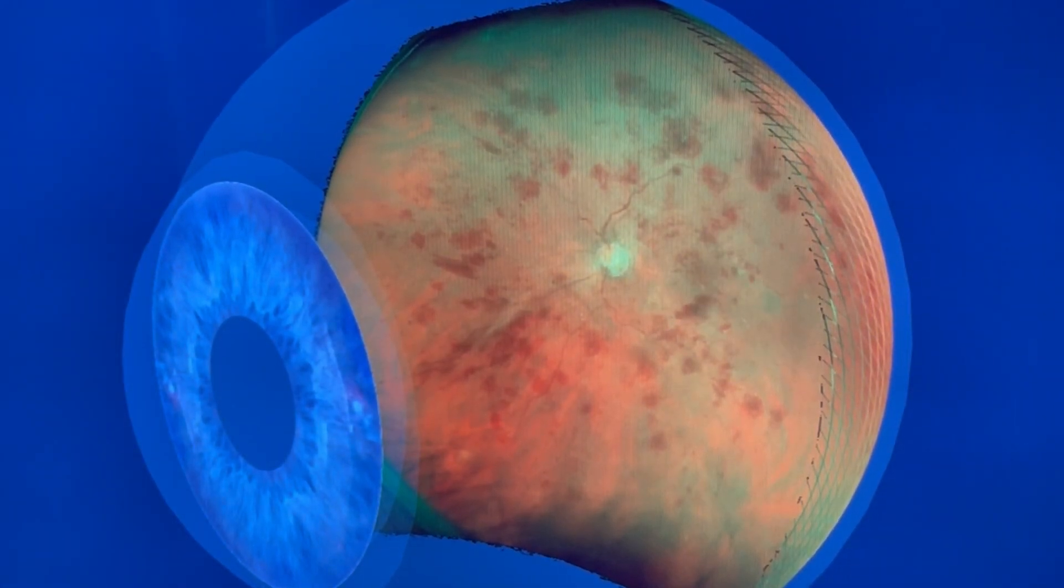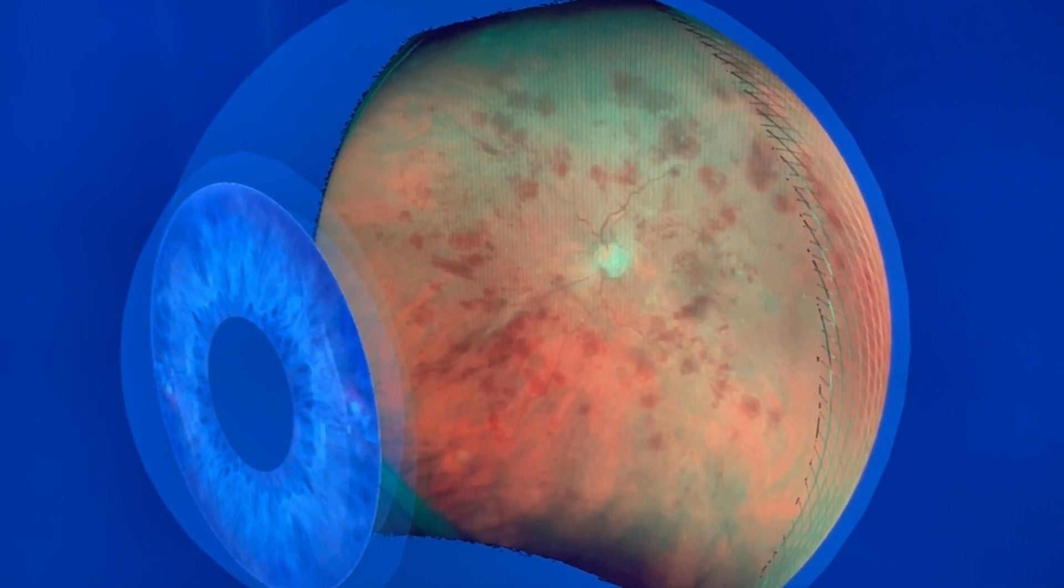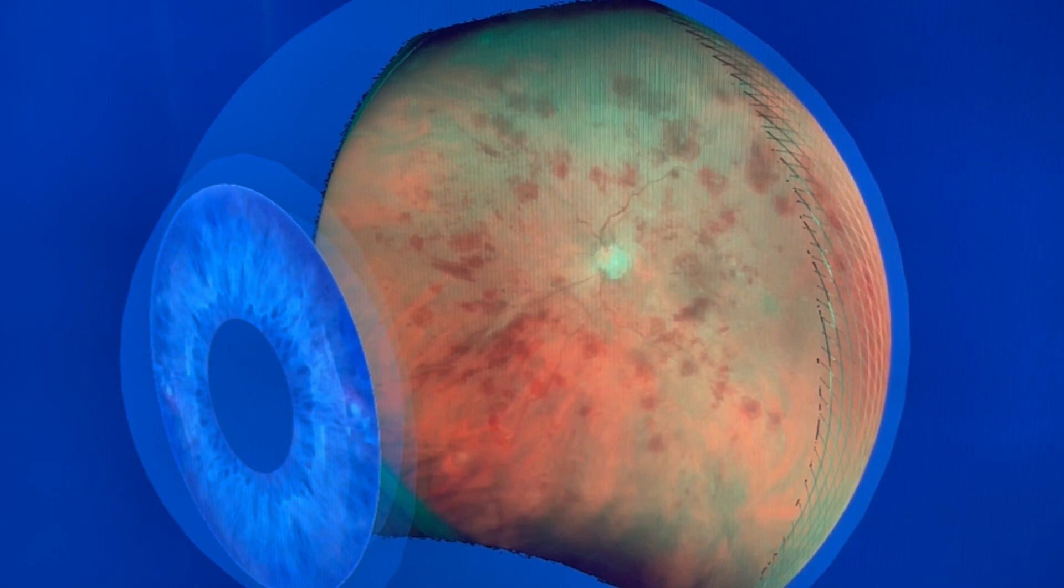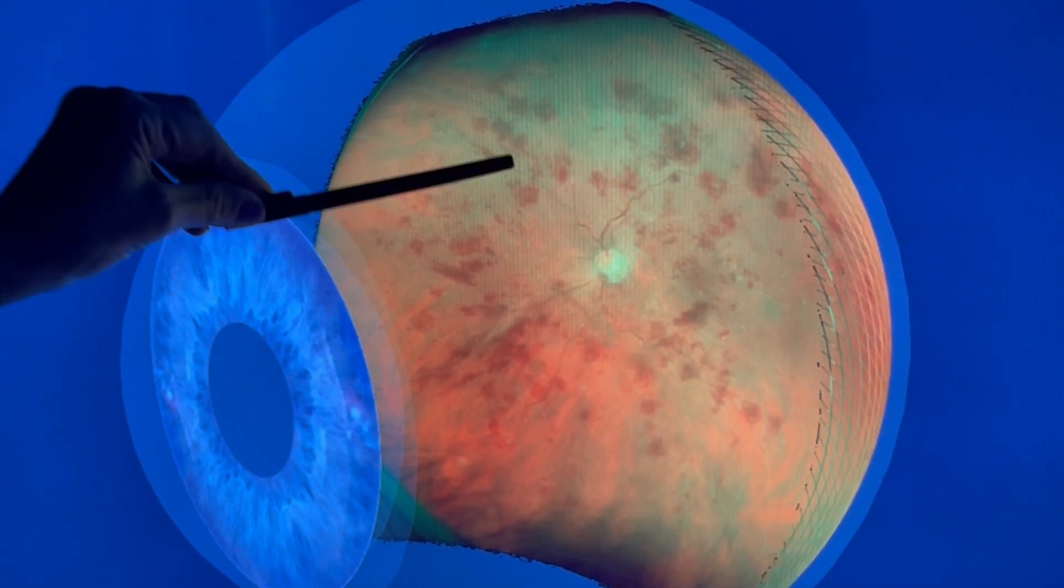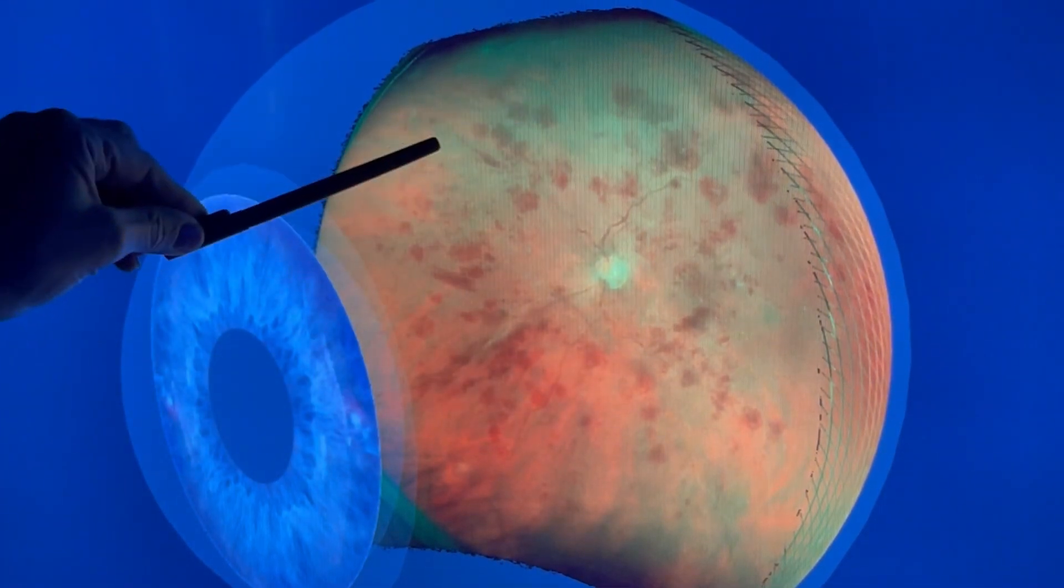Sometimes we can get a thrombus in that area which occludes the vessel, and when that happens the blood backs up into the eye as you can see here. It almost looks like someone scattered ketchup all over the retina.